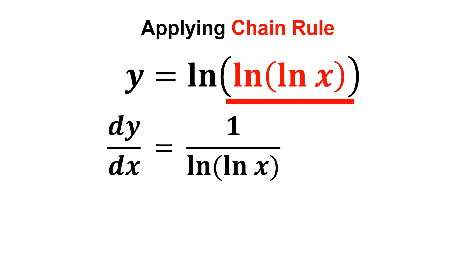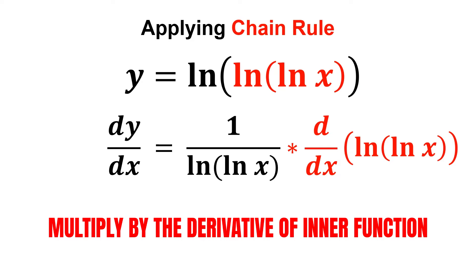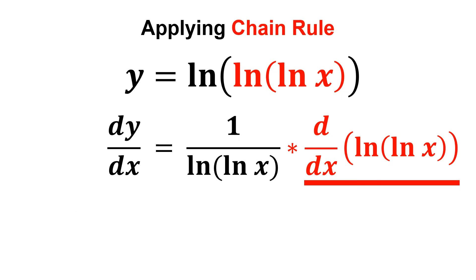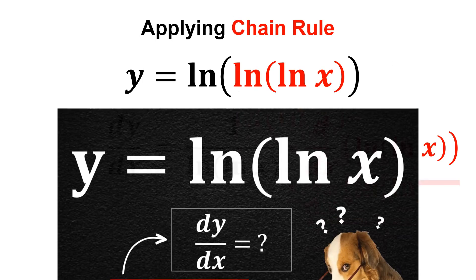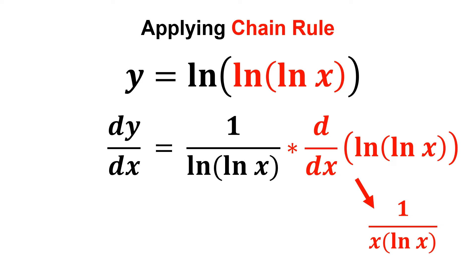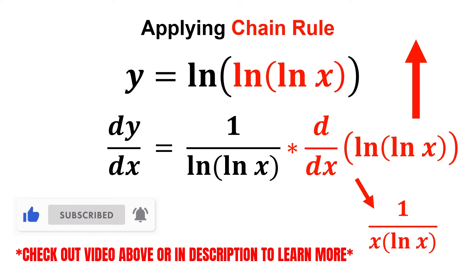According to the chain rule, we then multiply it by the derivative of the inner function. In this case, we multiply it by the derivative of ln of ln x, which is exactly what we discussed in my previous video, in which we got 1 over x multiplied by ln x for the derivative. You may check out the video above or in description if you want to learn more about this.